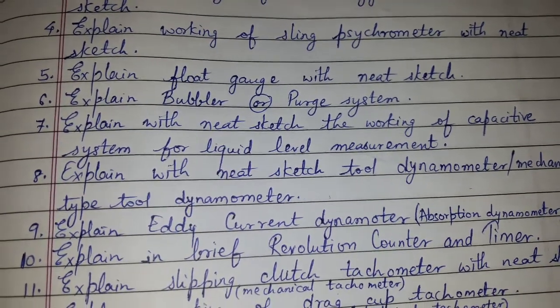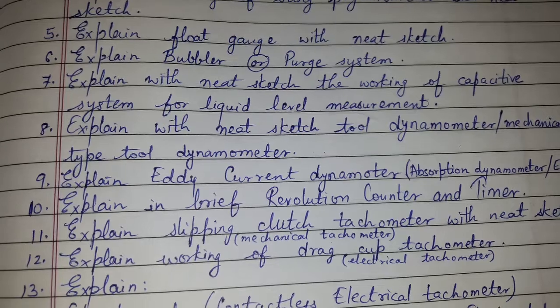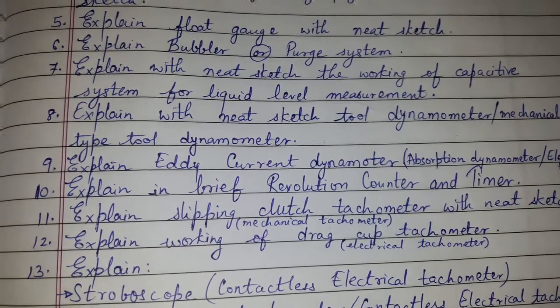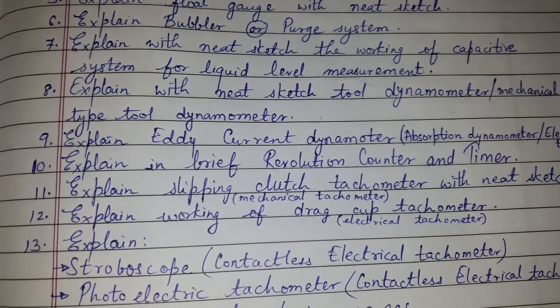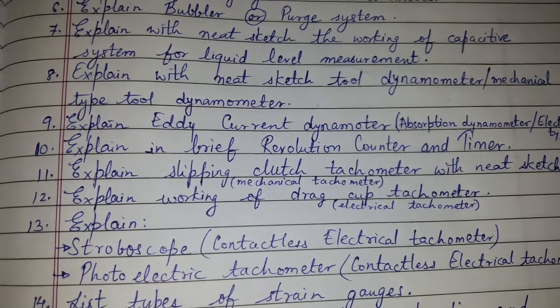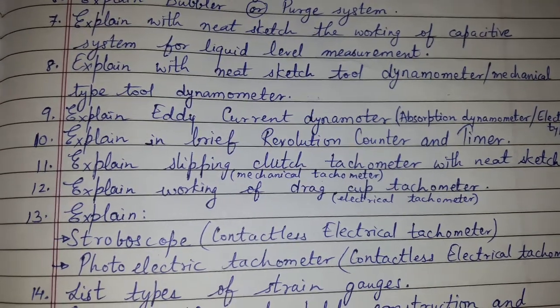Explain float gauge with neat sketch. Explain bubbler or perth system. Explain with neat sketch the working of capacitive system for liquid level measurement.